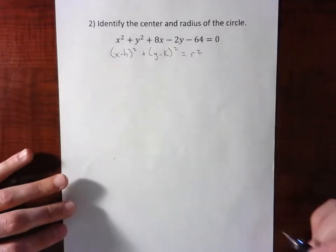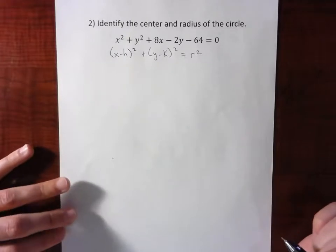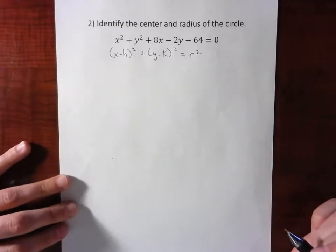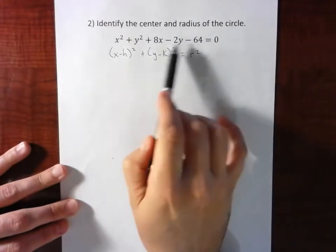Here's example two from our circles lesson. Identify the center and radius of the circle. Pretty typical problem. Notice, however, the form they've given us is general form.